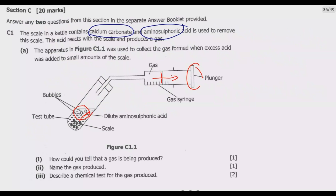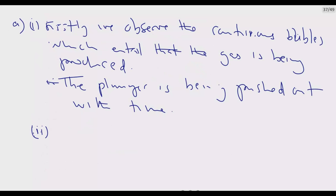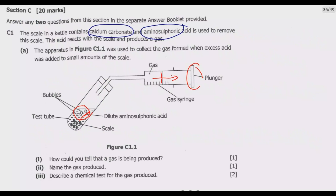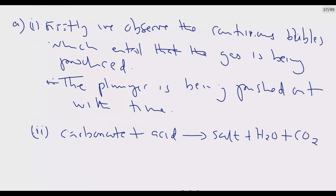For Loma N2, name the gas produced. We have a carbonate — calcium carbonate — reacting with an acid. Using the general equation: carbonate + acid → salt + water + carbon dioxide. Even if you don't know the formula of aminosulfonic acid, you can use this generic equation to confirm that the gas produced is carbon dioxide.